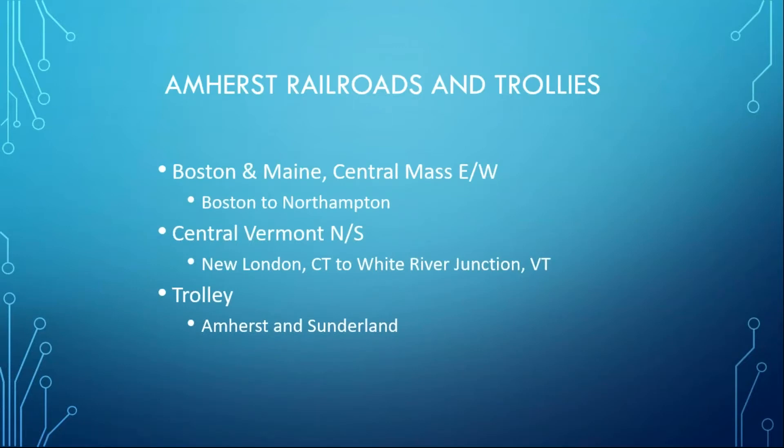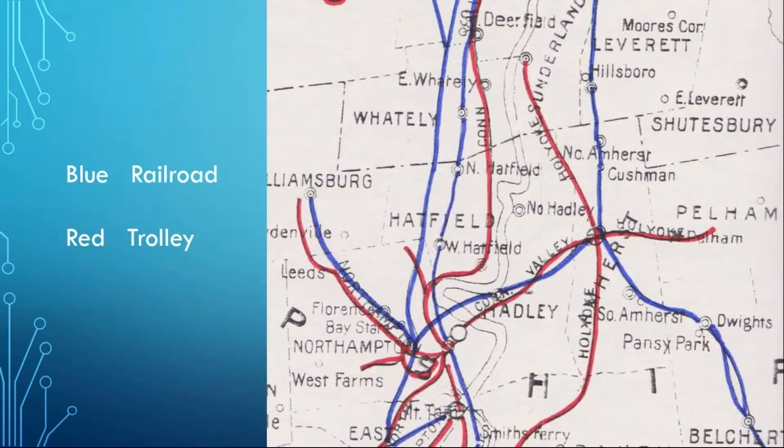For those of you who don't know, Amherst, Massachusetts, had railroads and trolley lines. The railroads were the Boston and Maine — the Central Mass branch, east and west, Boston to Northampton. North-south was the Central Vermont, New London, Connecticut to White River Junction, Vermont. And the trolley system, like most larger towns, was the Amherst and Sunderland trolley. The railroads are in blue lines on the map, and the red was the trolley lines — you could get just about anywhere in that general area by one or the other.